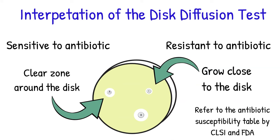We will have to measure the inhibition zones and compare it to the table established by CLSI and FDA to determine that the bacteria is susceptible, intermediate, or resistant.